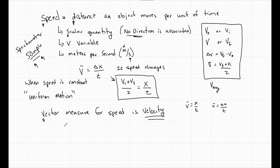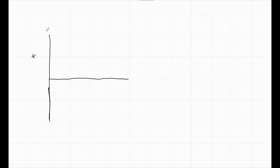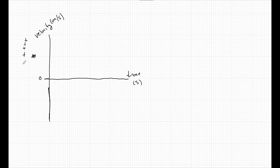Because velocity is a vector and direction is important, velocity can be positive or negative. A lot of students don't understand what a negative velocity means. To show this, let's look at a graph. The y-axis is velocity in meters per second, and the x-axis is time in seconds. We always label our axes. The positive quadrant is everything above zero, and the negative quadrant is everything below zero. So maybe this goes 2, 4, 6, 8 above, and minus 2, minus 4, minus 6, minus 8 below.